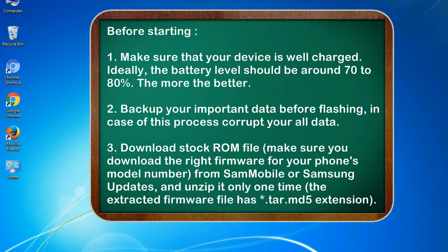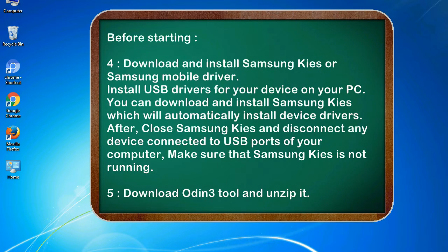3. Download the stock ROM file. Make sure you download the right firmware for your phone's model number from Sammobile or Samsung updates, and unzip it only one time. The extracted firmware file has a *.tar.md5 extension. 4. Download and install Samsung KIES or Samsung mobile driver to install USB drivers for your device on your PC. After installing, close Samsung KIES and disconnect any device connected to USB ports, making sure Samsung KIES is not running. 5. Download Odin 3 tool and unzip it.